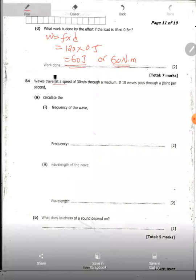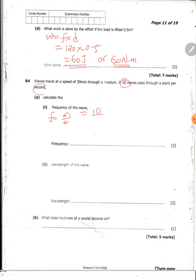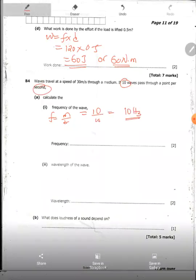Question B4 says, waves travel at a speed of 30 meters per second through a medium. If 10 waves pass a certain point per second, calculate the frequency of the wave. Now frequency is equal to the number of complete oscillations over time taken. Now here, the number of complete oscillations here is 10 per second. One second. So we have 10 hertz as frequency. If 10 waves pass through a point per second, frequency is the number of complete oscillations passing through a second. So the frequency is 10 hertz.